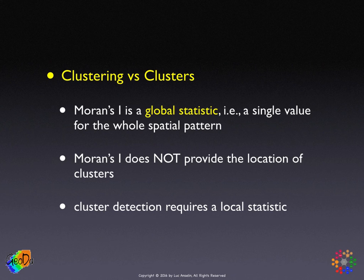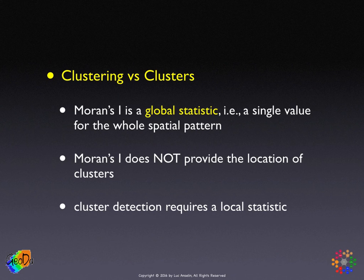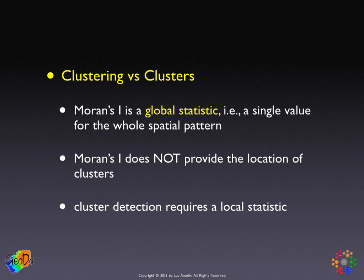You may wonder what we need Moran's I for then. It is very useful in the context of specification testing. For example, when you do regression analysis you want to make sure that the error terms are uncorrelated, which includes, as a special case, being spatially uncorrelated. Moran's I is a good statistic to check whether or not this is the case, because you're not necessarily interested in where clusters of residuals might be — for that, Moran's I is no good and you need a different approach. But Moran's I is a great global statistic for testing whether this basic assumption underlying your regression analysis is satisfied. It is largely not usable to identify the location of clusters; for that, we need a local statistic.